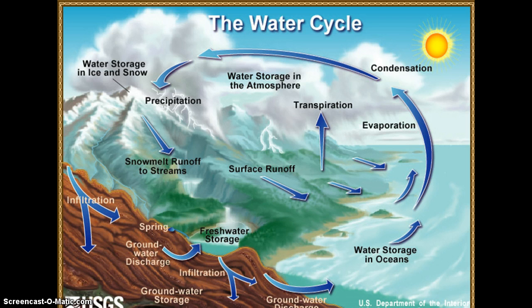The process by which water changes from a liquid to a gas or vapor is evaporation, which is the main pathway that water moves from the liquid state back into the water cycle as atmospheric water vapor. The USGS 2014 reports that the oceans, seas, lakes, and rivers provide approximately 90% of atmospheric moisture through evaporation. Plant transpiration contributes the remaining 10% of atmospheric moisture. We often hear about evaporation and transpiration in a combined term — that is, evapotranspiration.